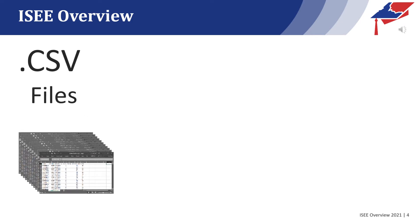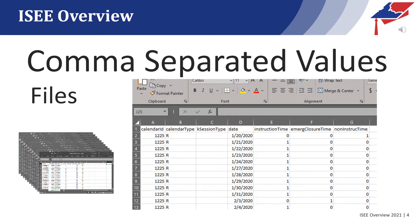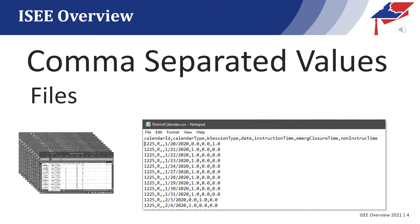These CSV files are text files that have the data separated by commas. When you load these files into Excel — for instance, the calendar file — Excel makes it easy to understand by separating the data into columns. However, if we were to load the same file into Notepad, you can see the fields are separated by commas and each record ends with an end of line. Notice the first line contains the field names. As we walk through the data, you can see each of the fields and the data in the records below that correspond to the position of the heading.